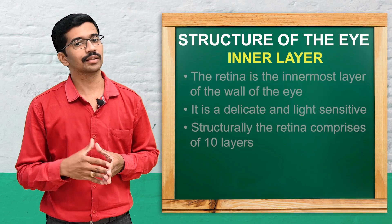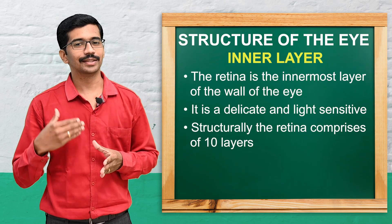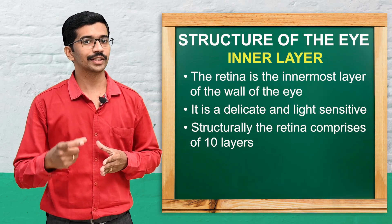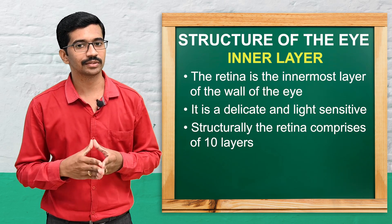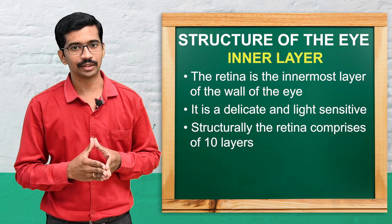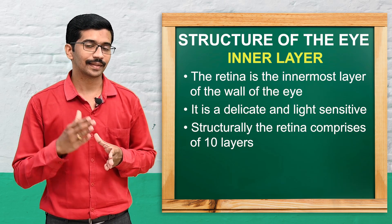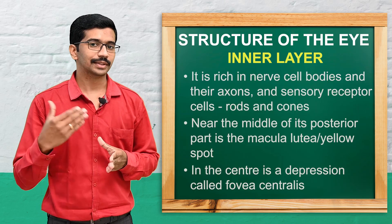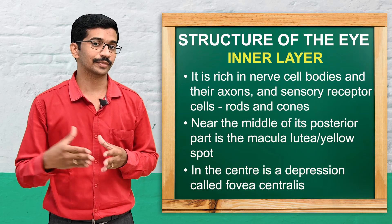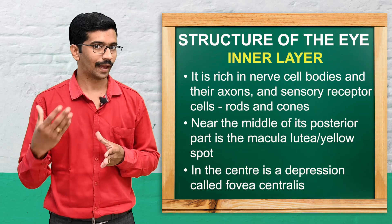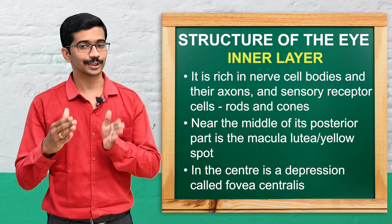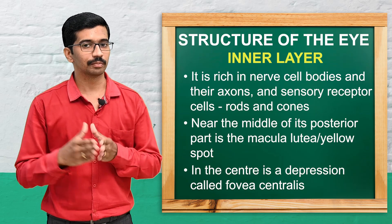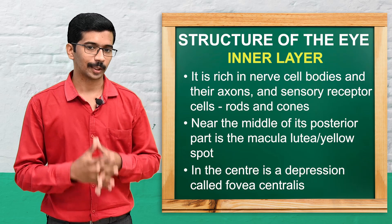The inner layer of the eyeball is termed the retina. It is a delicate, highly light-sensitive layer. Structurally, the retina contains 10 layers. It is highly rich in nerve cell bodies and axons, and contains the sensory receptor cells — the rods and cones.